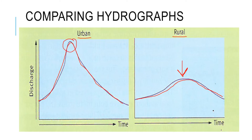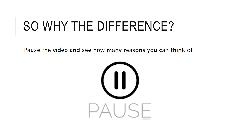That's really interesting. Once we can describe how rivers in urban and rural areas differ, we can start asking ourselves why. What I'd like you to do for the next few minutes is pause the video and think of how many reasons you can come up with to explain why urban and rural river discharge might be different after a storm event.